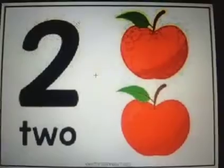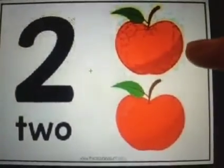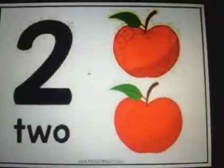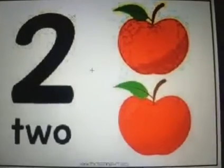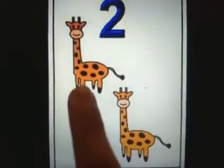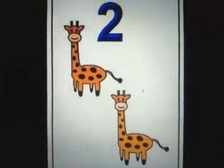Let's count the apples here. We'll count it together. 1, 2. 2 apples. We can see a few giraffes. So now let's count how many giraffes are here. 1, 2. 2 giraffes. So now let's learn how to write number 2.